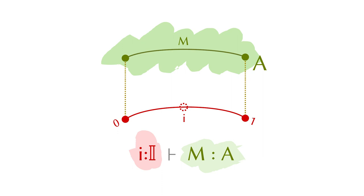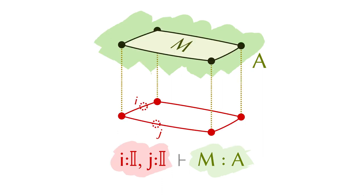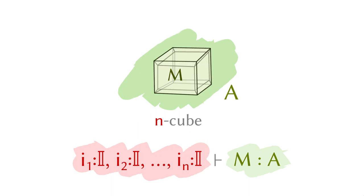You can put more than one interval in the context. Suppose you have two intervals — that will give you a square. You can also put in more. In general, if you have N intervals in the context, then you will have an N-dimensional cube in the picture. And that's why it's called cubical type theory.